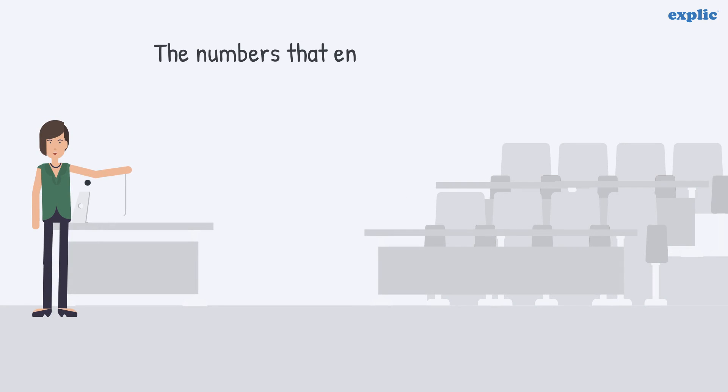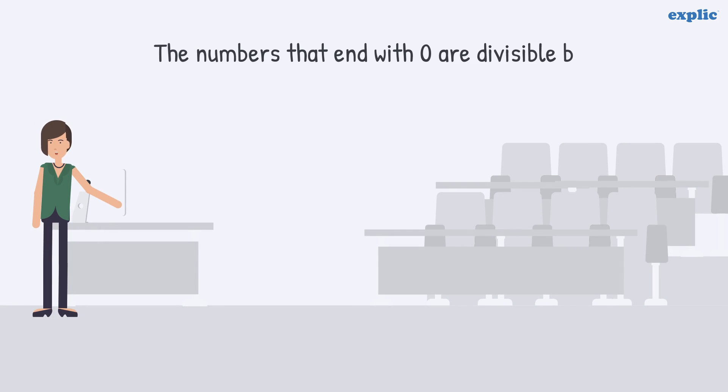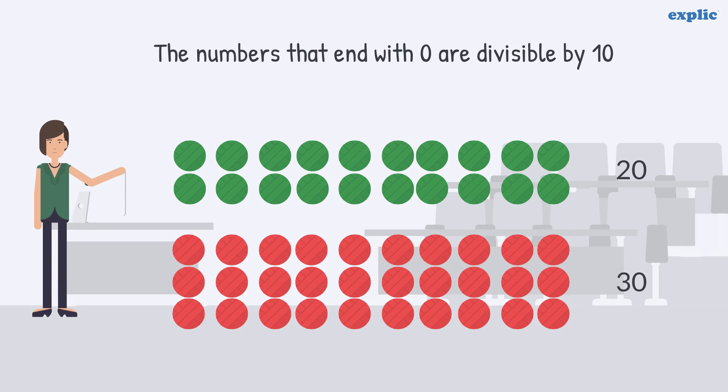The numbers that end with 0 are divisible by 10. For example, 20 and 30.